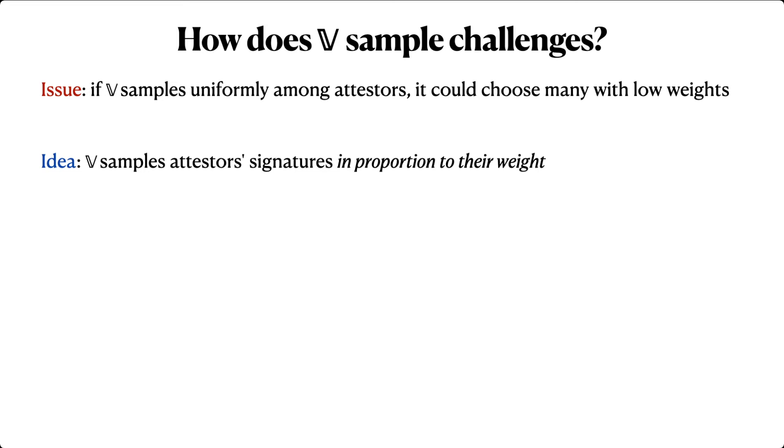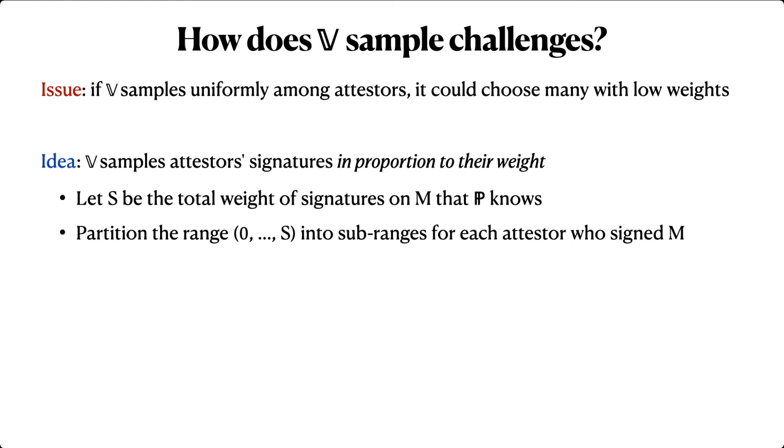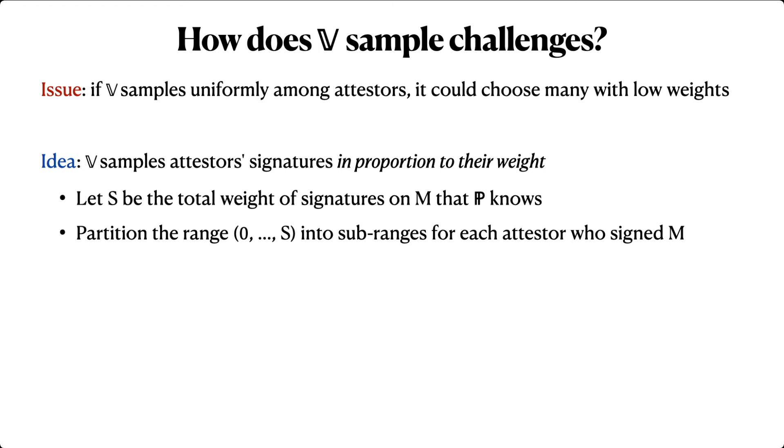Intuitively, what we want instead is for the verifier to sample attester's signatures in proportion to their weight. Specifically, define capital S to be the total weight of signatures on the message M that the prover knows. Now we partition the range from 0 to S into sub-ranges, one for each attester who signed the message M.